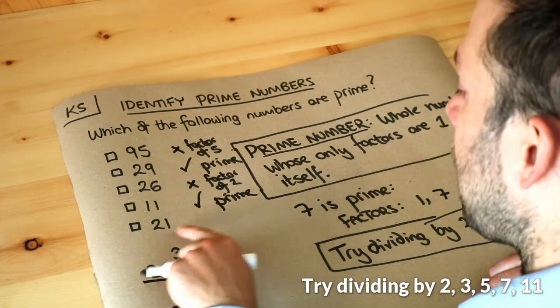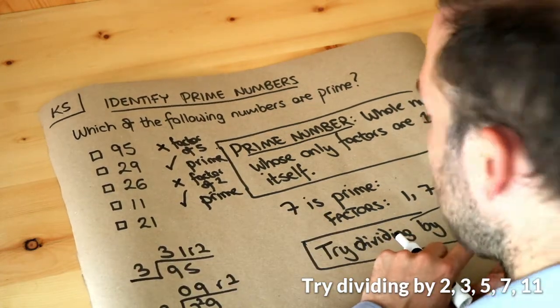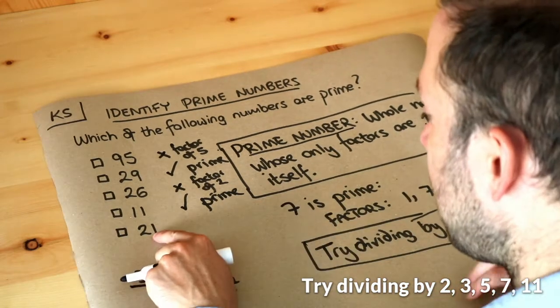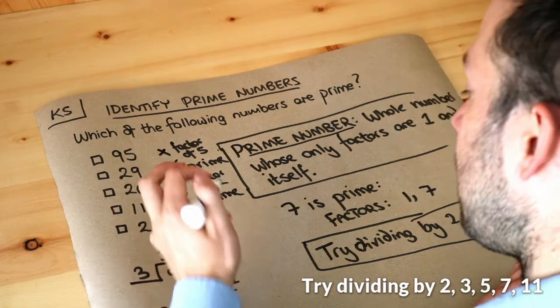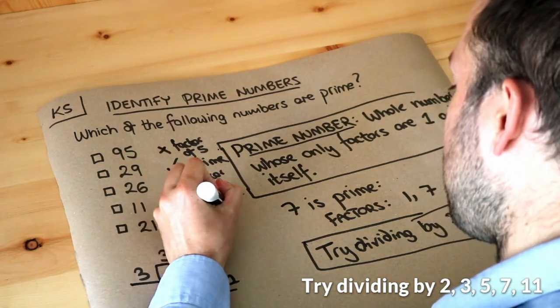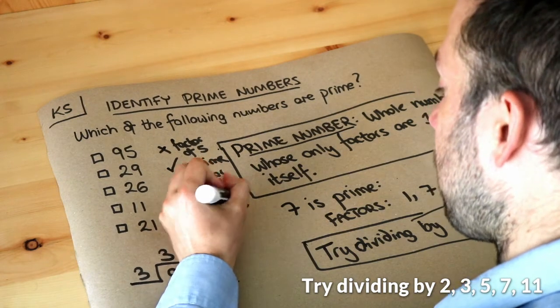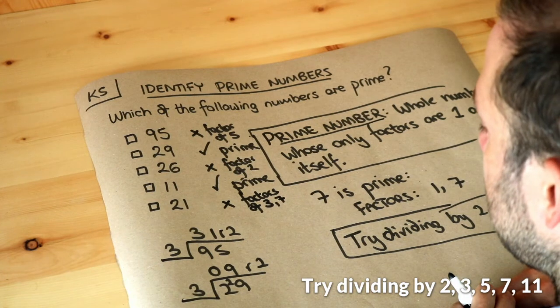And finally, 21. Does 21 divide by two? No, it's an odd number. Does 21 divide by three? Yes, 21 does divide by three. It goes in seven times. So therefore it's not prime because it has factors of three. It also has a factor of seven as well, so that one is not prime.